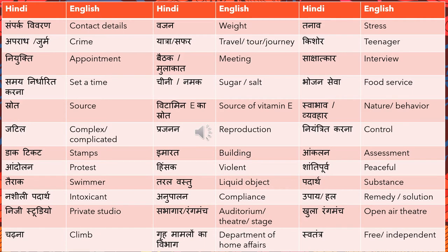'Swabhav' means nature and 'vyavhaar' means behavior — 'unka swabhav aisa hi hai' means his nature is this way. 'Jatil' means complex or complicated. 'Prajanan' means reproduction. 'Niyantrit karna' means control. 'Dak tikat' means stamps — in a dialogue about hobbies, 'dak tikat jama karna' means stamp collection.